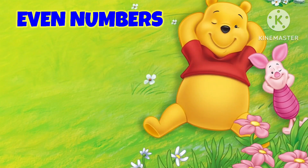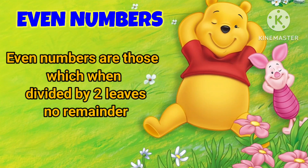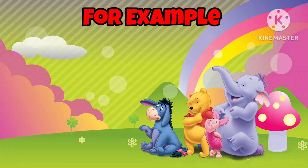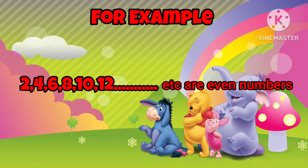Let's see what are even numbers. Even numbers are those which when divided by 2 leaves no remainder. For example, 2, 4, 6, 8, 10, 12, etc. are even numbers.